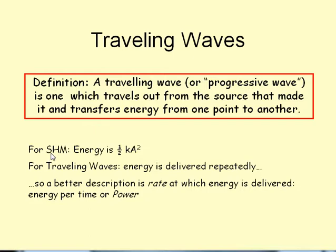But I just want to distinguish between simple harmonic motion. When we calculated energy in the wave, like a mass oscillating on a spring, was one-half the spring constant times the square of the amplitude. For this case, we have traveling waves. The energy is delivered over and over again. So a better description is going to be the rate at which energy is delivered, and we call that power.